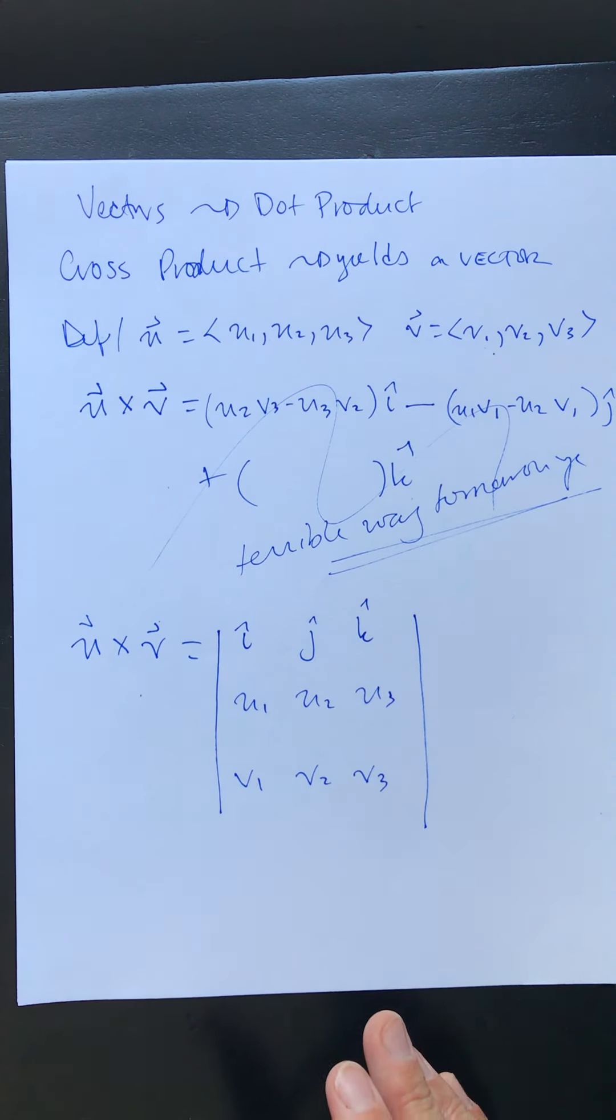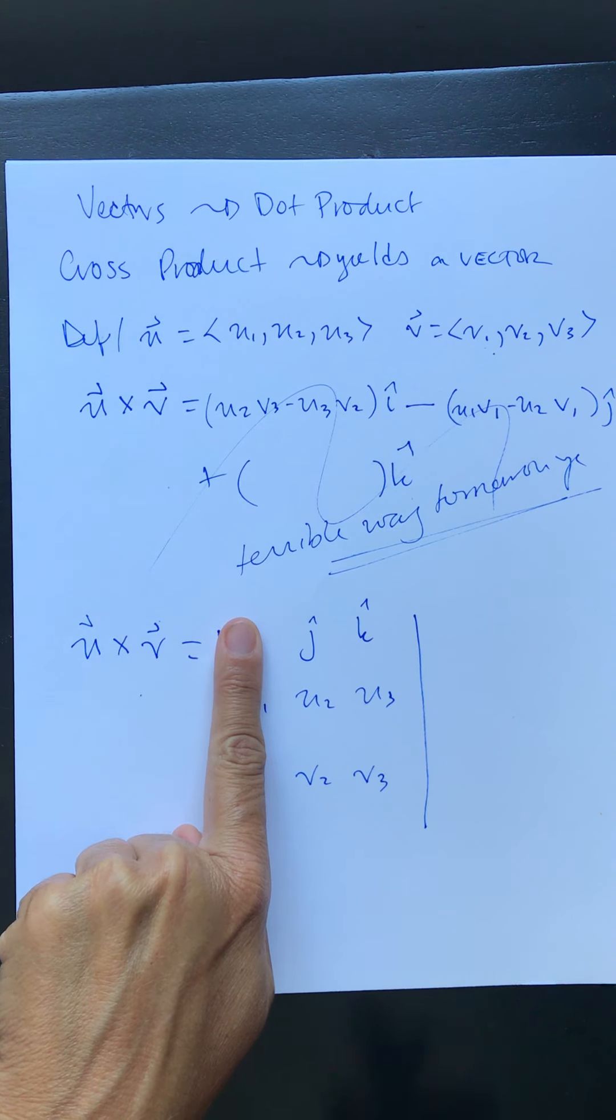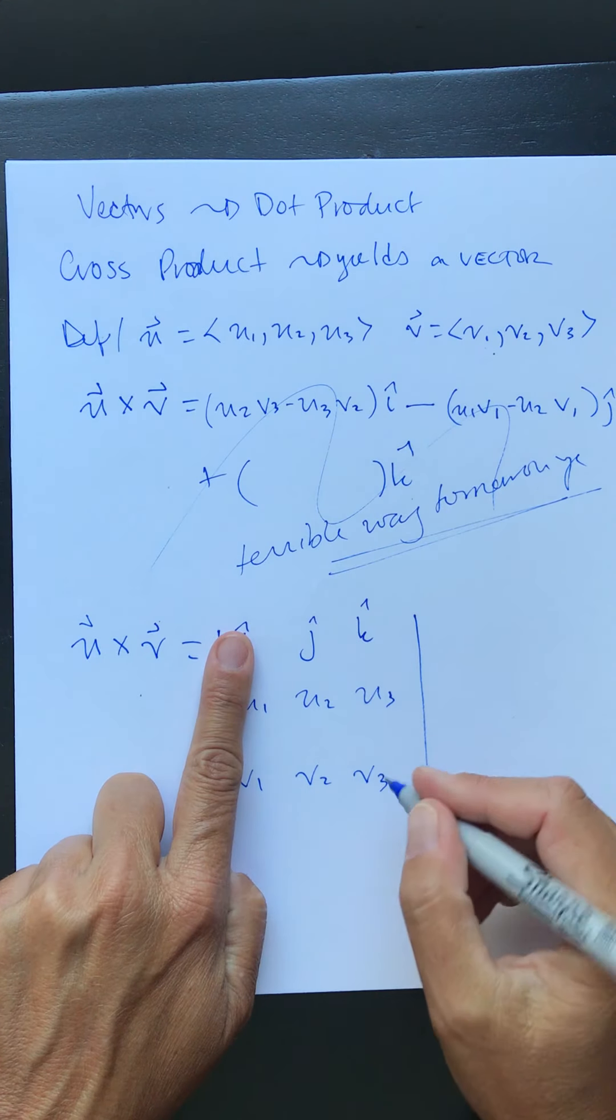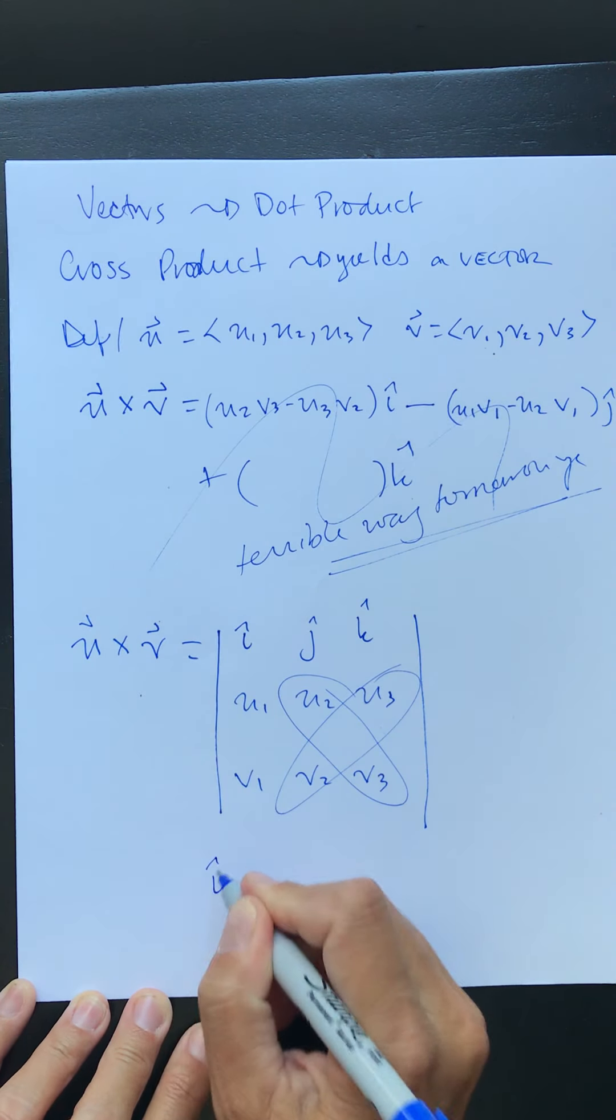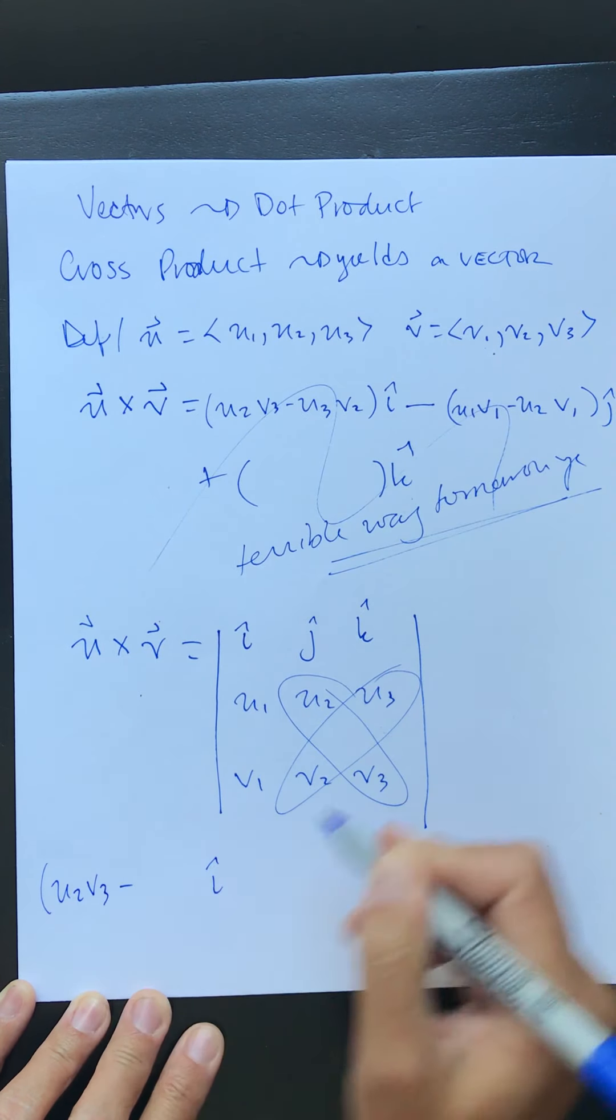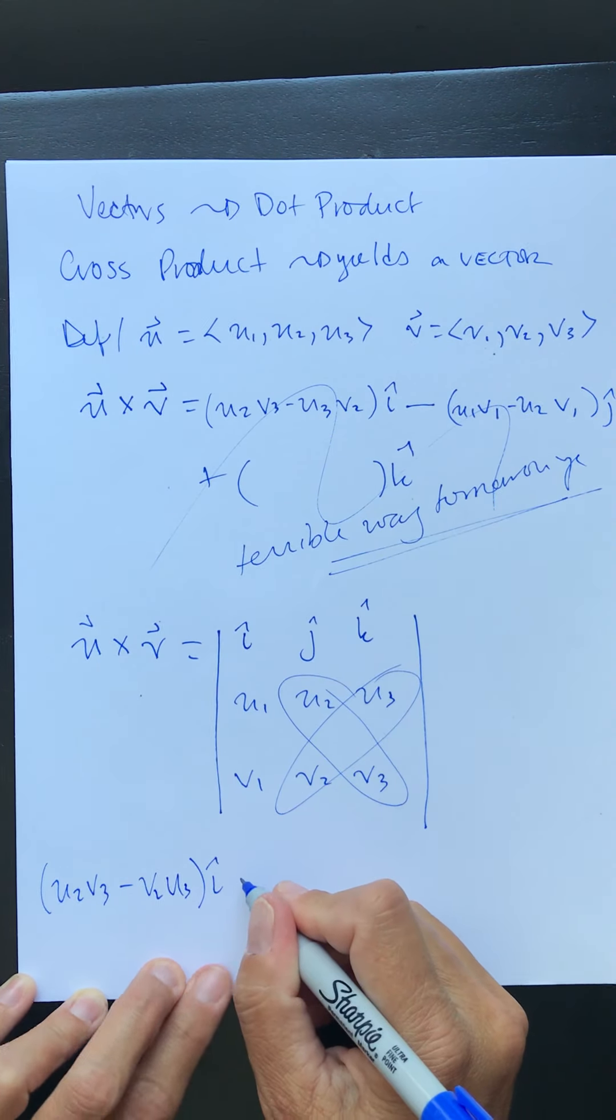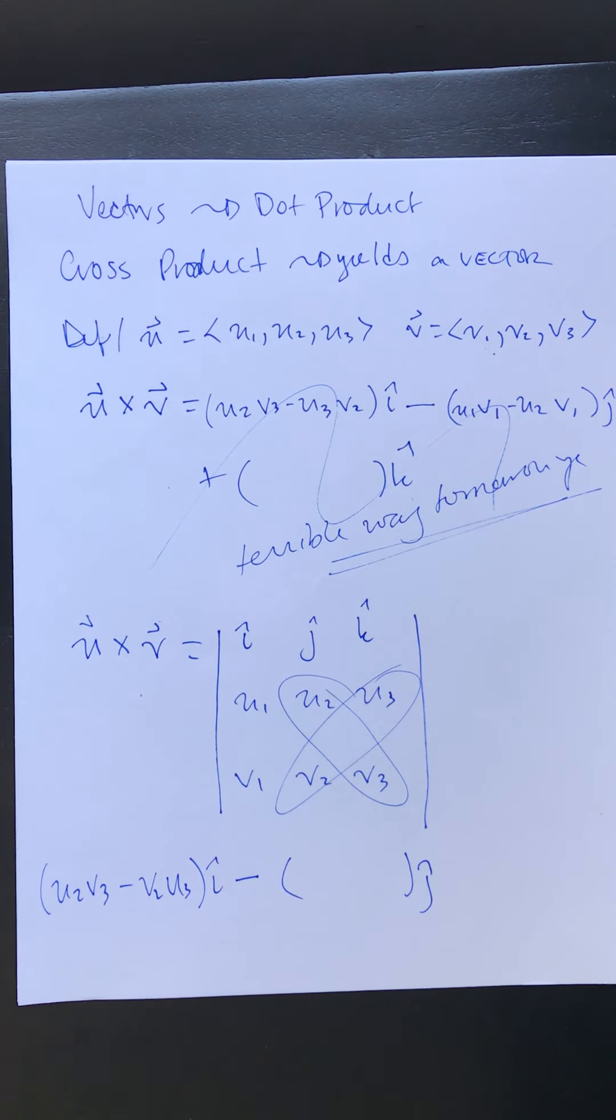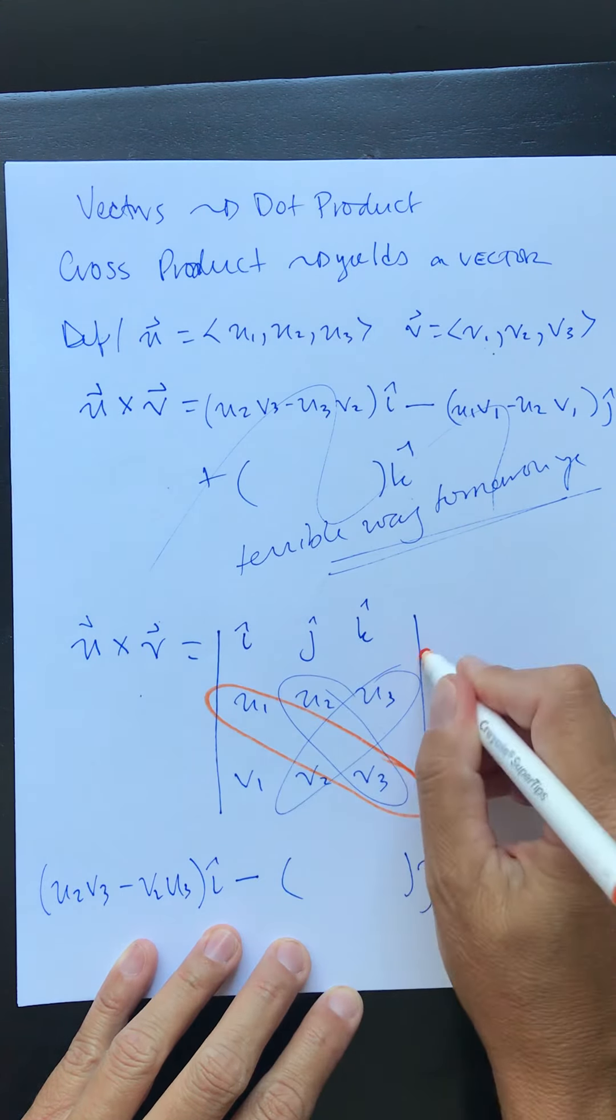Now in order to find the i hat component we're going to cross out the i hat column and we're going to find the determinant of the matrix down here. If you're not familiar with working with matrices, all you need to know is that we're going to do this minus this. So our i hat component is going to be the product of u2 v3 minus v2 u3. Oh of course I wrote it in the wrong order. Minus, remember our j hat is always negative. So now for our j hat we're going to cross out the j hat column and we're going to do these minus these.